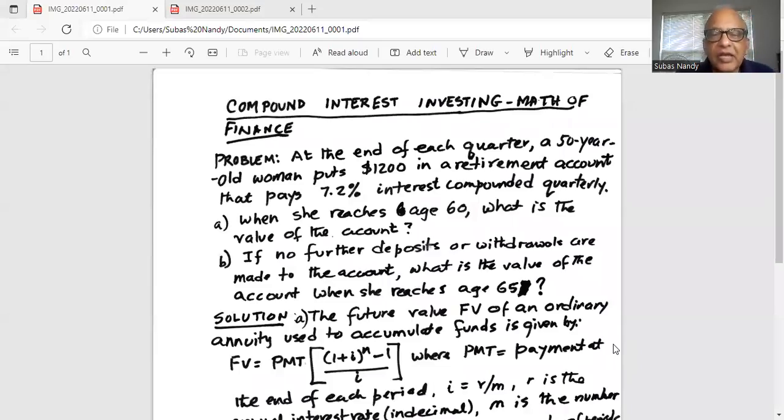The problem states, at the end of each quarter, a 50-year-old woman puts $1,200 in a retirement account that pays 7.2% interest compounded quarterly. Part A, when she reaches age 60, what is the value of the account? Part B, if no further deposits or withdrawals are made to the account, what is the value of the account when she reaches age 65?